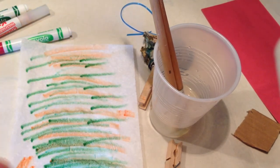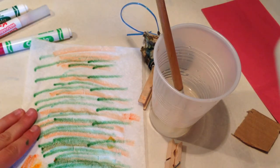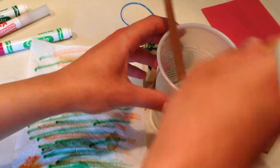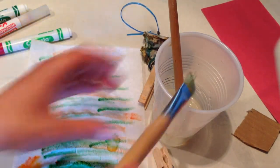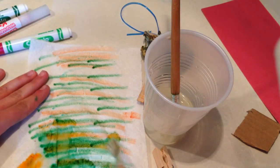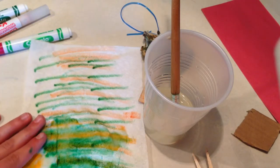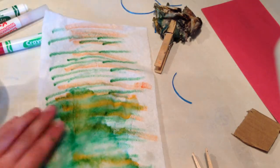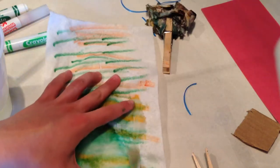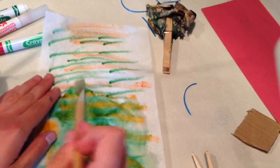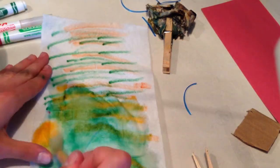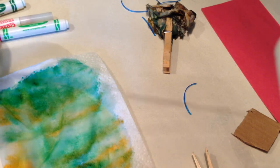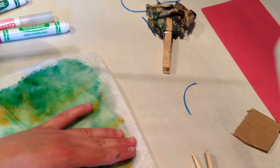Once you're ready, take the paintbrush and gently paint the paper towel. You want to cover the whole paper towel. By painting it, you smudge the colors together a little and spread the color. You can see down here. You can do it on both sides and it will just seep through.